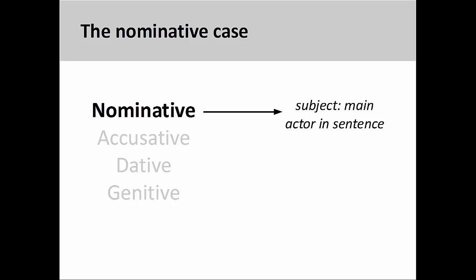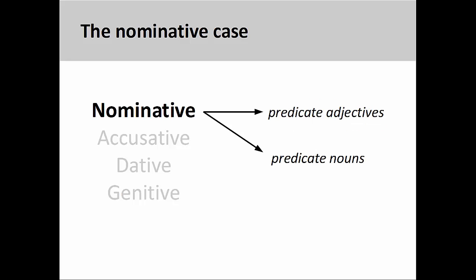The nominative case is used to mark the subject of the sentence, which is the person or thing performing the main action in the sentence. It is also used to mark the predicate adjective or predicate noun in a sentence. You may want to review the presentation on the nominative case before learning about the accusative case.